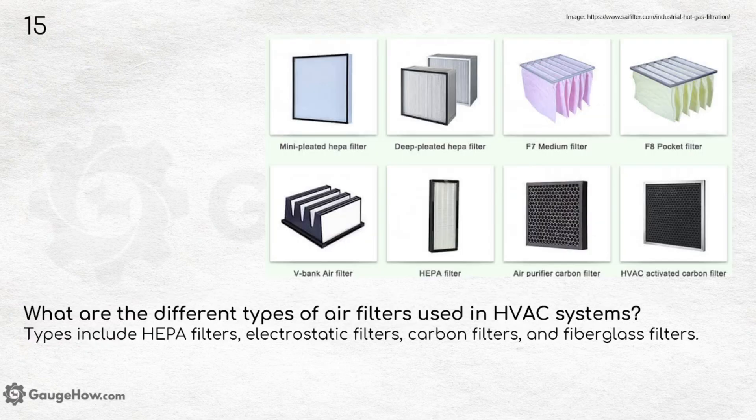What are the different types of air filters used in HVAC systems? This is a very important question, and many people are asked about it in interviews — you might also have to explain the working of the filters. Types include HEPA filters, electrostatic filters, carbon filters and fiberglass filters.